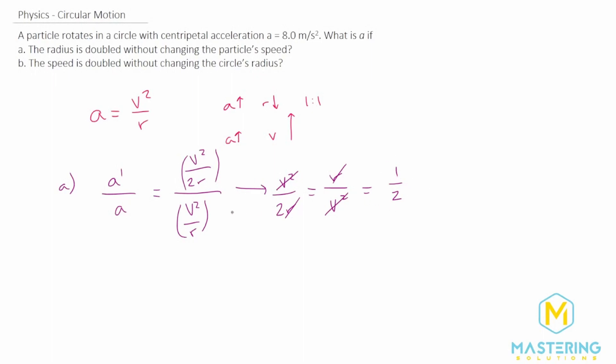The r's will cancel, so what we're left with is one half. This means the new acceleration compared to the old acceleration will be one half. So 8 meters per second squared will go to 4 meters per second squared if we double the radius.